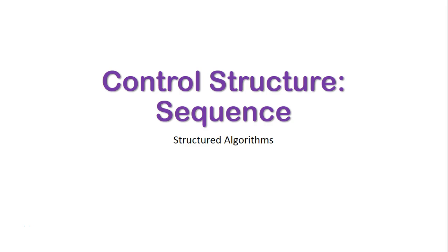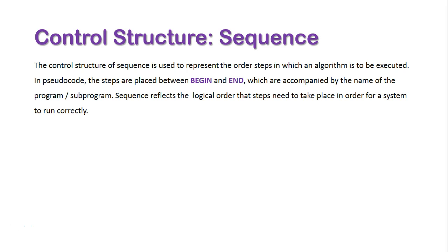We're now going to take a look at the control structure of sequence. As part of our look at structured algorithms, we will look at sequence in both pseudocode and flowchart format. The control structure of sequence is used to represent the order of steps in which an algorithm is to be executed. In pseudocode, the steps are placed between begin and end, which are accompanied by the name of the program or sub-program. Sequence reflects the logical order of steps that need to take place in order for a system to run correctly.